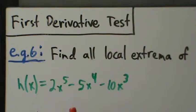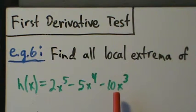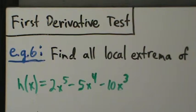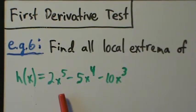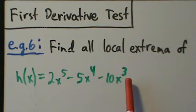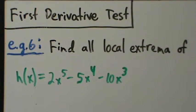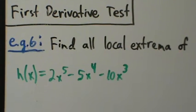Step 0: find the domain of h of x. It's just a polynomial — 2x to the 5th, 5x to the 4th, 10x cubed — and for all polynomials, the domain is just all real numbers. We can take any number raised to the 5th, 4th, or 3rd power, so the domain is all real numbers. There's nothing really worth writing down for that.